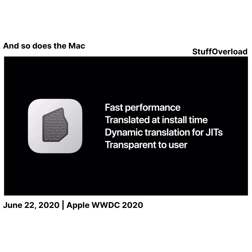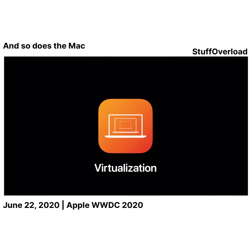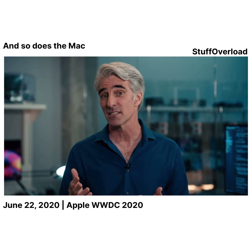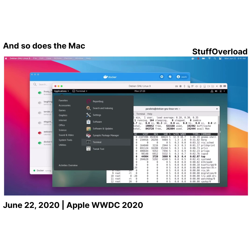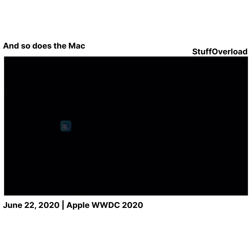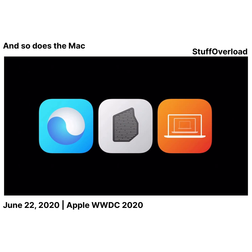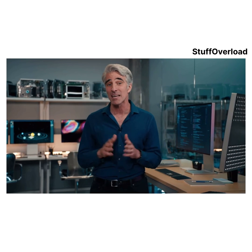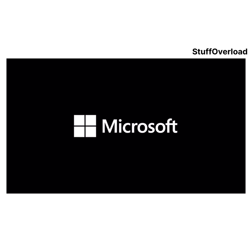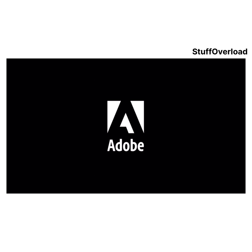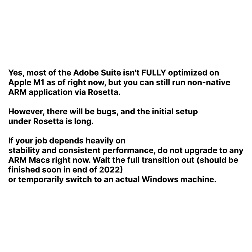Rosetta 2 is transparent to users and the performance is amazing. We're also introducing new virtualization technologies in Mac OS Big Sur, so for developers who want to run other environments like Linux or tools like Docker, we have you covered. When you put all of these technologies together — Universal, Rosetta, and virtualization — you have a system that can run an amazing diversity of apps. Some of the biggest Mac developers have already gotten started. Microsoft is hard at work on Office for Mac, and we've been working with Adobe on their flagship Creative Cloud.